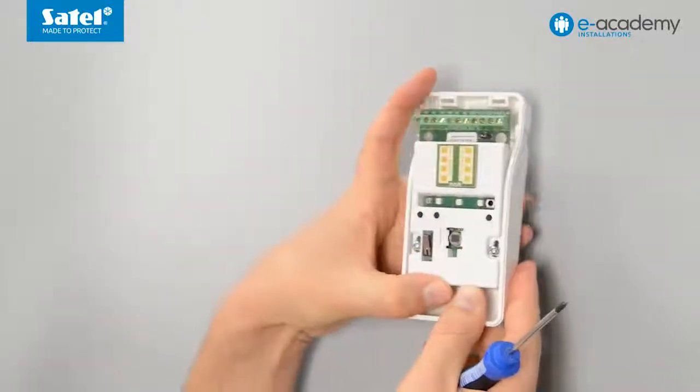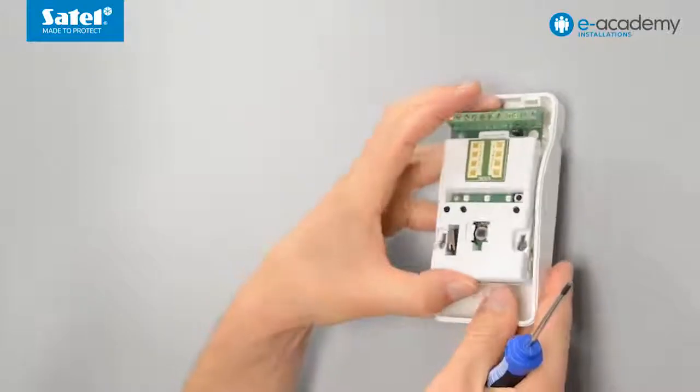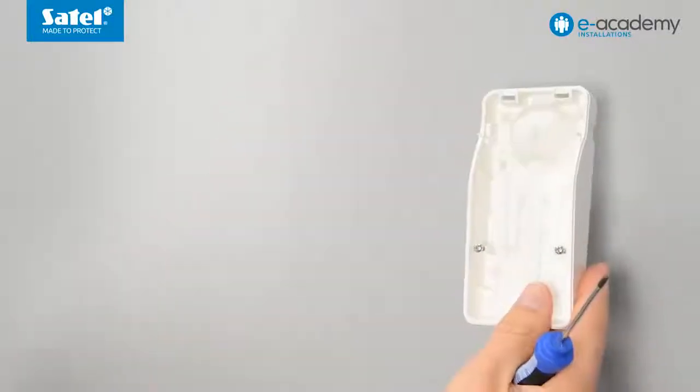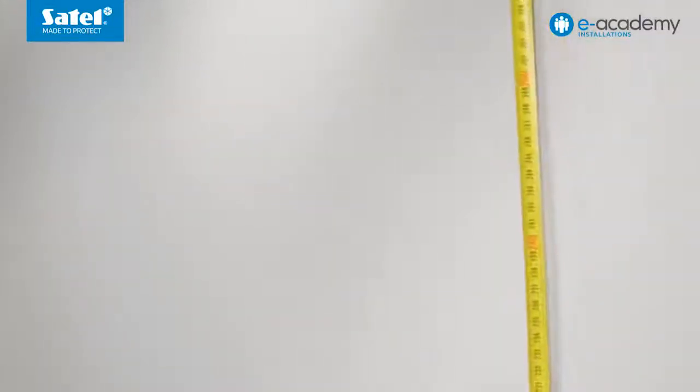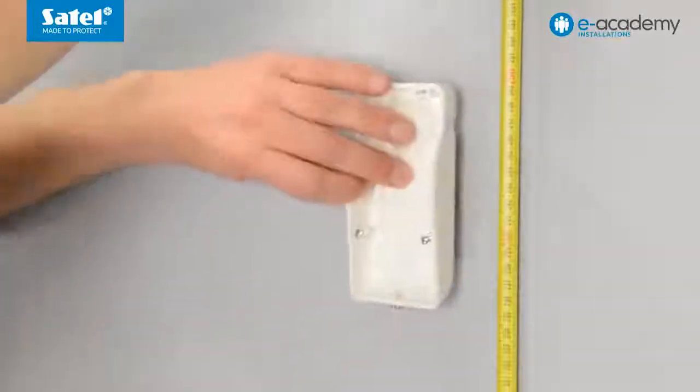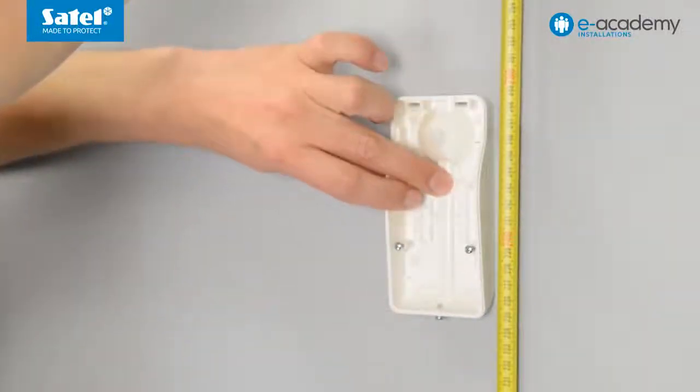Next, prepare the mounting points on the wall. Begin by determining at what height the detector is to be installed. The recommended height is 2.4 meters.